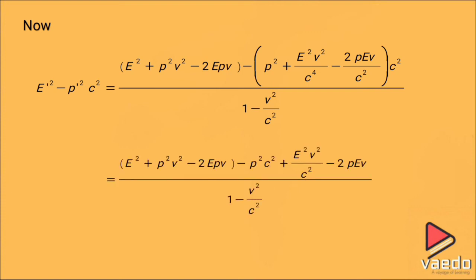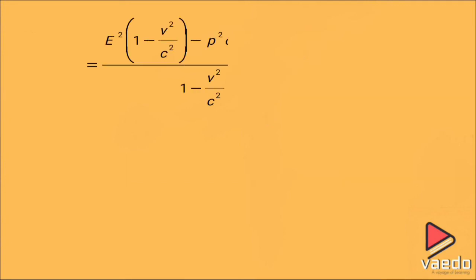After simplification, we get E²(1 − v²/c²) − p²c²(1 − v²/c²) in the numerator, all divided by (1 − v²/c²). The form of this equation is exactly similar to the x and t transformation.